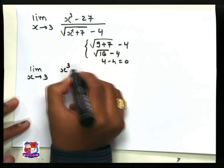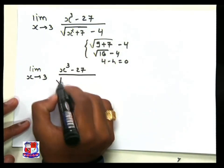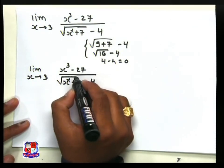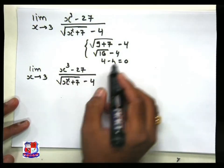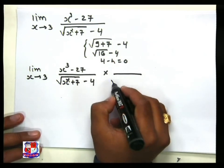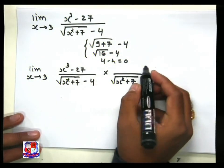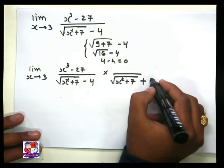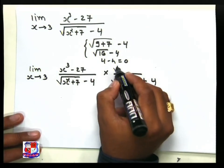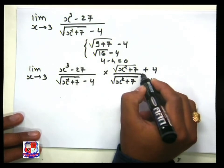We write limit x tends to 3 with x cube minus 27 as it is in the numerator, divided by under root of (x squared plus 7) minus 4. To remove the square root, we multiply and divide by the rationalization term: under root of (x squared plus 7) plus 4.